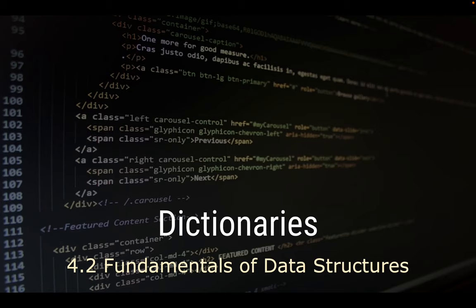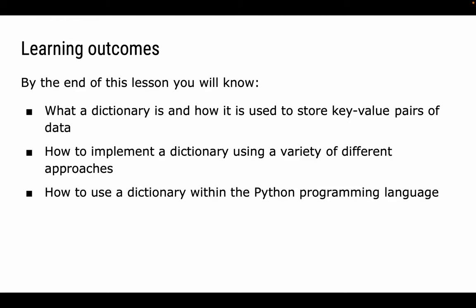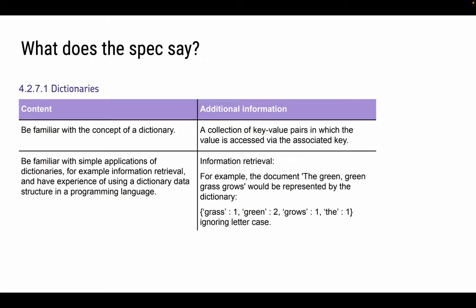I'm going to be explaining the dictionary data structure for the AQA A-Level Computer Science course. In this video we're going to learn about what dictionaries are and how we use them to store key-value pairs of data. We're going to talk about different ways of implementing them and also how to use them within Python. This is going to be quite a short video, there's not a lot to say about dictionaries and you're probably familiar with using them in a programming language already anyway.